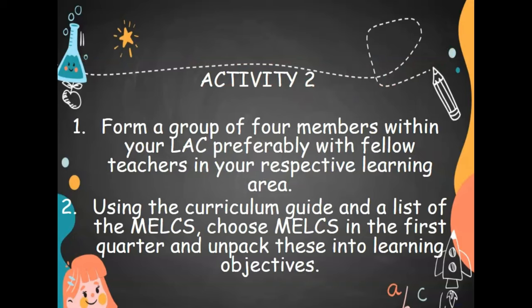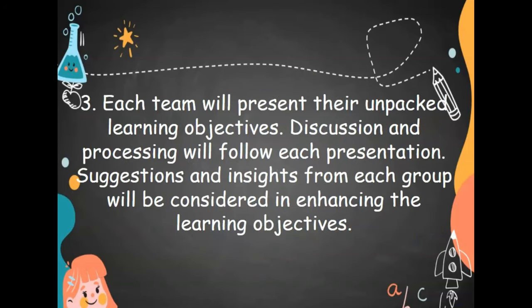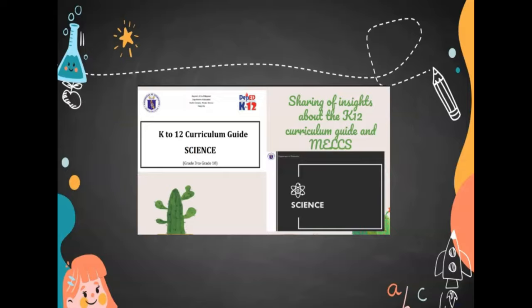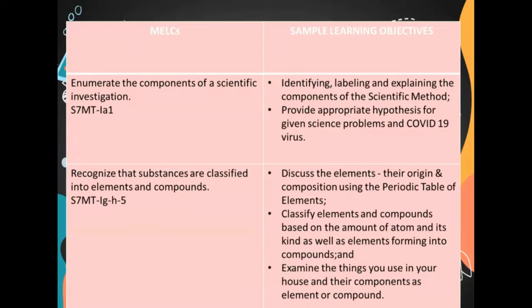Activity number 2: Form a group of 4 members within your LOC, preferably with fellow teachers in your respective learning area. Using the curriculum guide and a list of the MELCS, choose MELCS in the first quarter and unpack these into learning objectives. Each team will present their unpacked learning objectives, followed by discussion and processing. MELCS sample: Enumerate the components of a scientific investigation. Learning objectives: identifying, labeling, and explaining the components of the scientific method.